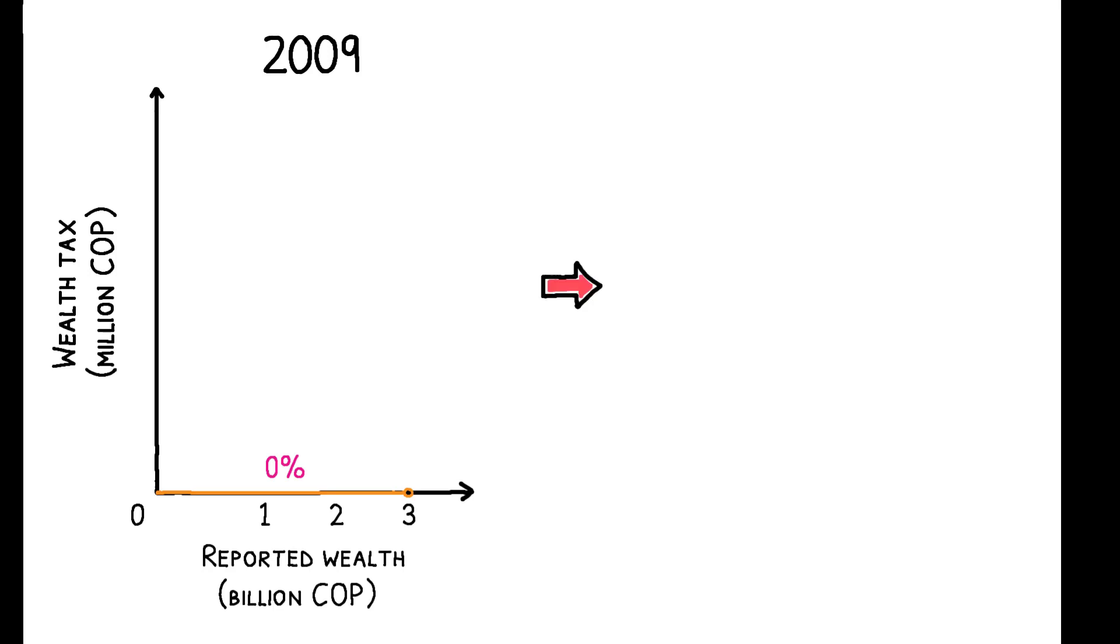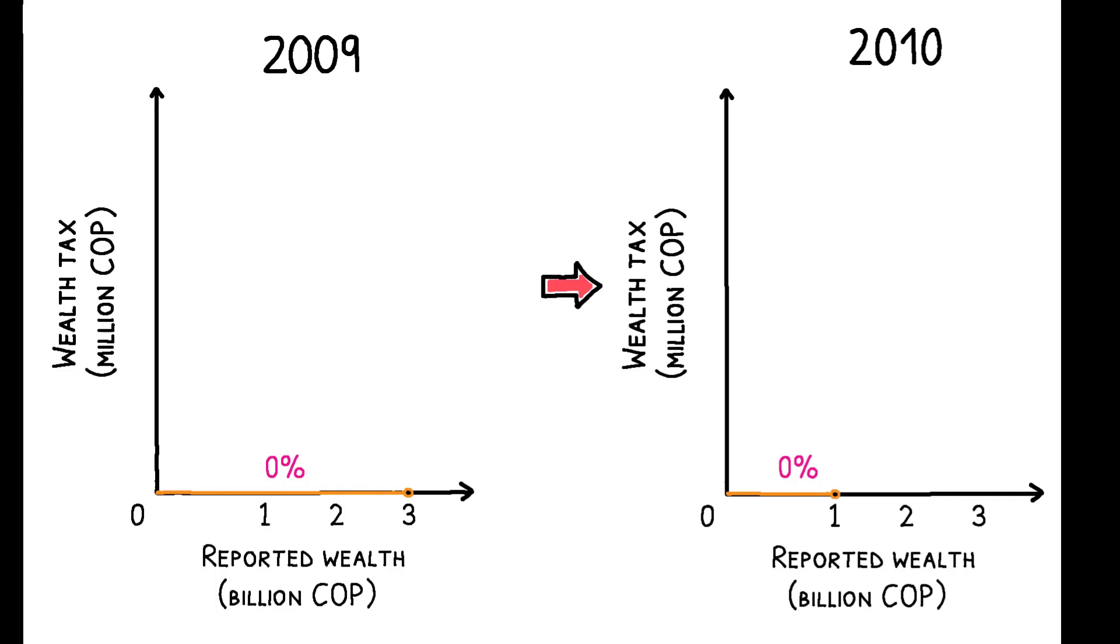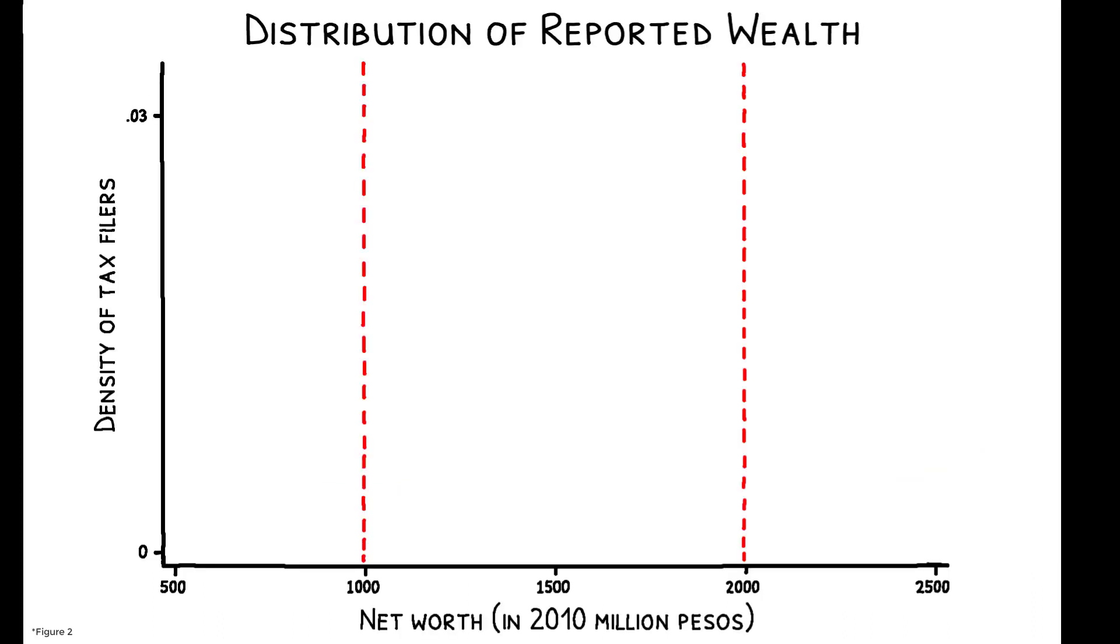This was temporarily dropped to 1 billion pesos in 2010, and two new tax brackets were introduced. These changes sparked an instantaneous response from taxpayers. Here, we see the distribution of tax filers who reported wealth in 2009, and then in 2010.